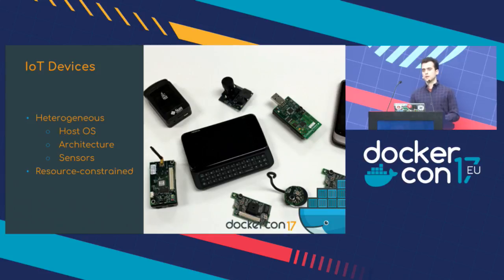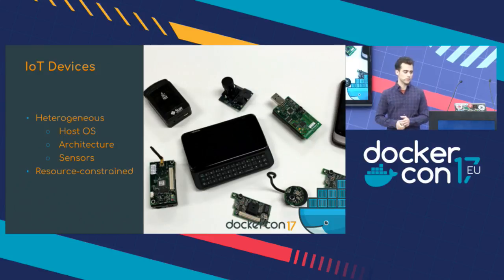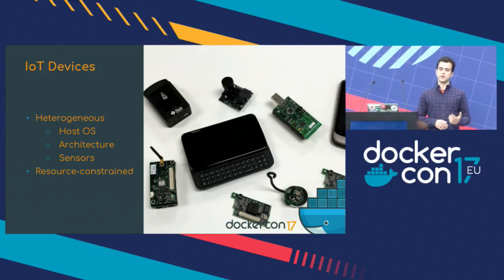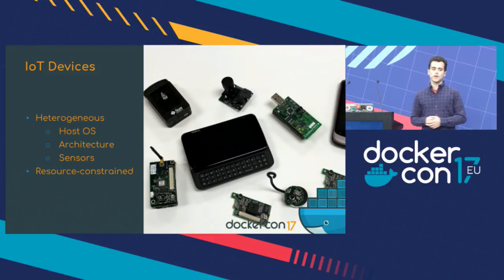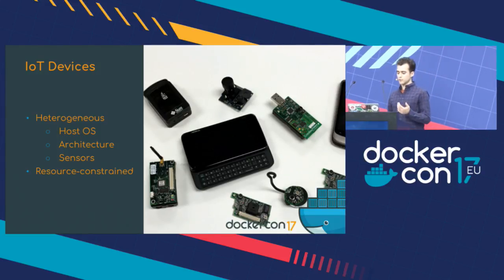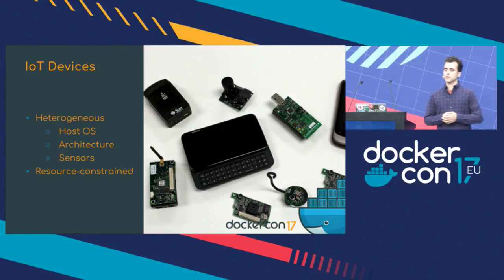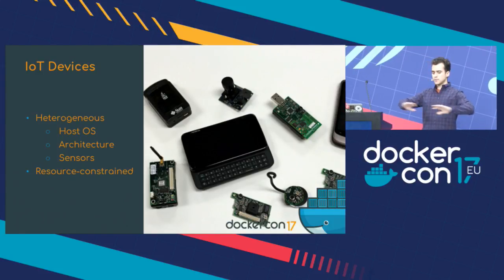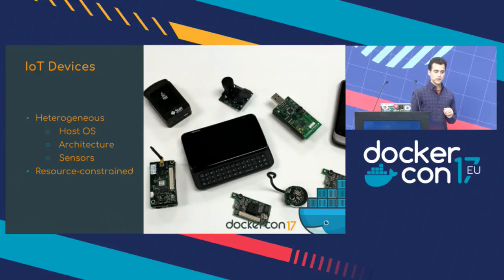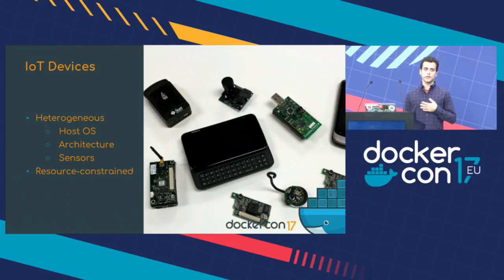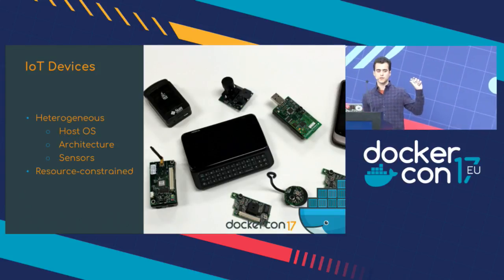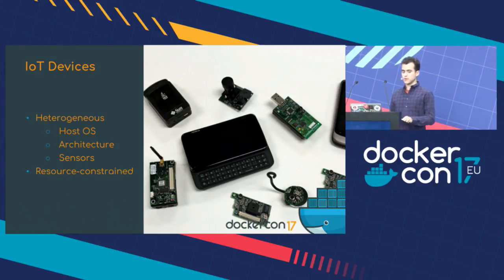The problem is that unlike cloud infrastructure, which is typically homogeneous and powerful, these IoT devices are resource-constrained and heterogeneous. They can be made by different manufacturers, they can have different Linux-based systems, different architectures such as ARM or x86, and they can have a variety of sensors and actuators. Whereas in a server deployment we're concerned with complete abstraction of the underlying hardware, in IoT we're actually interested in the heterogeneity. And secondly, these devices are resource-constrained. When I deploy an image on a server farm, I don't care about the size. But when I do it on IoT devices, size is very important because it can lead to high cost.